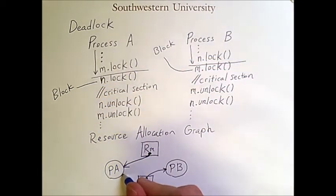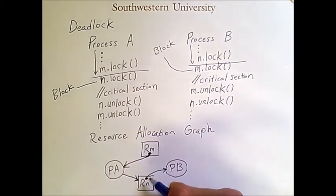meaning we draw an arrow from the circle, the process, to the box, the resource. Now, we can't claim it because there's no available dots to claim.